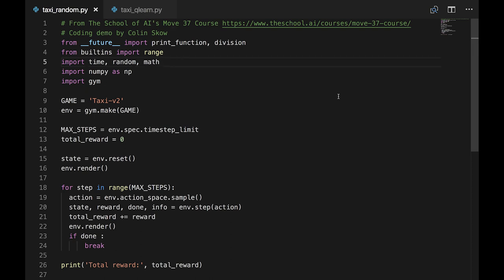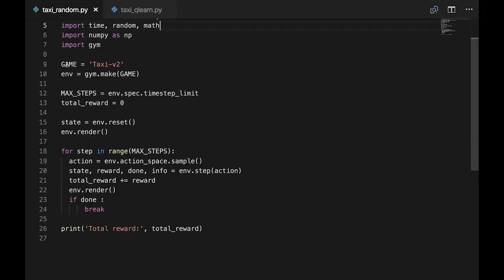This is taxirandom.py. First, we make an instance of the environment. Max steps is the maximum number of steps the environment will permit until it force quits. We're going to track our total reward. First thing we do is reset our environment which returns the initial state. env.render draws the environment on the screen in its current state. Now we'll loop until the game is done. env.action.sample returns a random action. env.step takes the action we've chosen and returns four values: the new state, the reward received, whether the game is done, and some info specific to each environment. We update our total reward and render the new game state on the screen. If the episode is done, we break. At the bottom, we print the total reward.